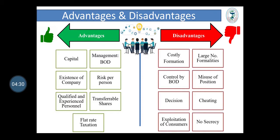Disadvantages. Formation: formation of a company is a costly and time-consuming process. Legal formalities: a large number of legal formalities are required to form a joint stock company. Control by board of directors: the company is managed by the board of directors who have no personal interest; therefore there is no incentive for them to manage the company more efficiently. Misuse of position: directors sometimes misuse their position and serve their own personal ends, ignoring the interest of shareholders. Decision: no prompt decision can be taken because of time lag between meetings. Cheating may happen; exploitation of consumers may happen by excessive pricing and poor quality goods. Secrecy cannot be maintained.